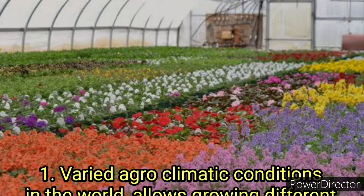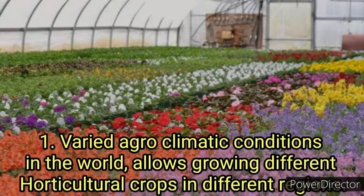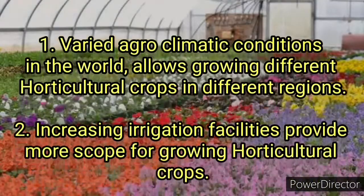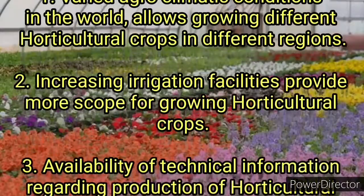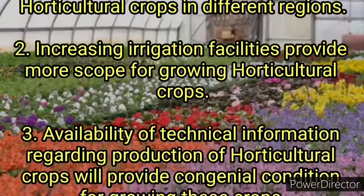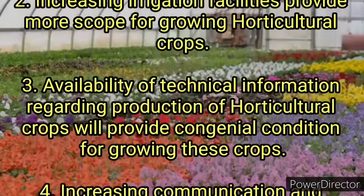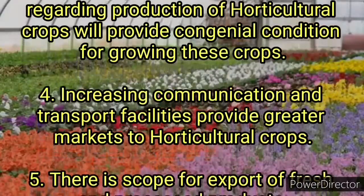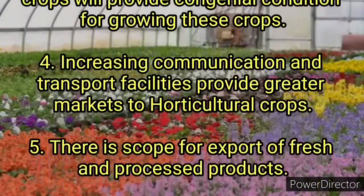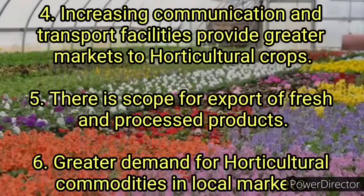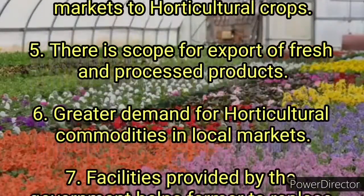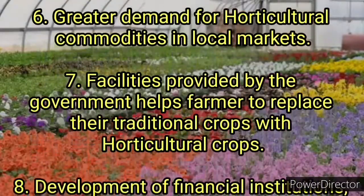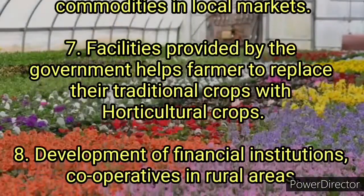The scope of horticulture is broad. Varied agroclimatic conditions in the world allow growing different horticultural crops in different regions. Increasing irrigation facilities provide more scope for growing horticultural crops. Availability of technical information regarding production of horticultural crops provides a congenial condition for growing these crops. Increasing communication and transport facilities provide great markets to horticultural crops, and there is scope for export of fresh and processed products.